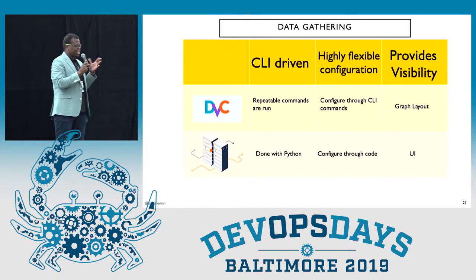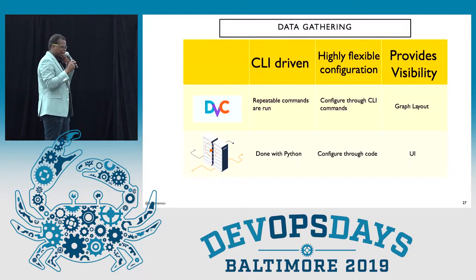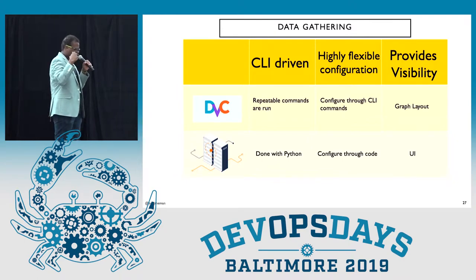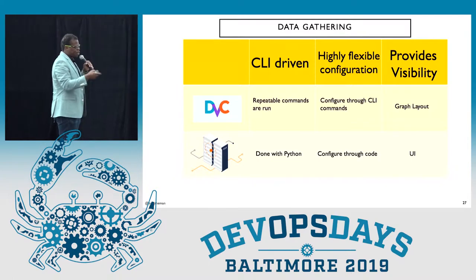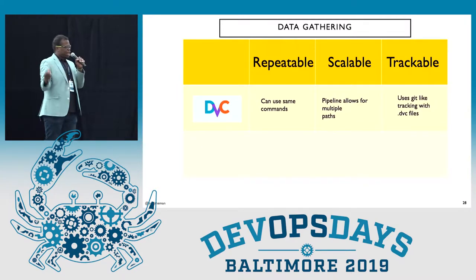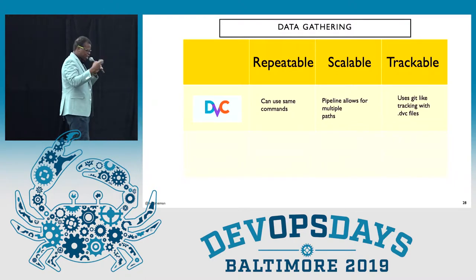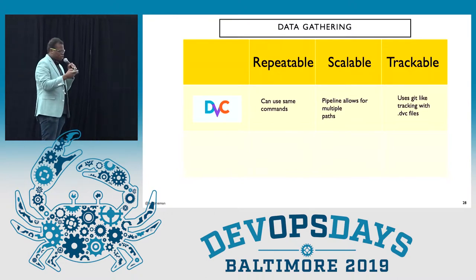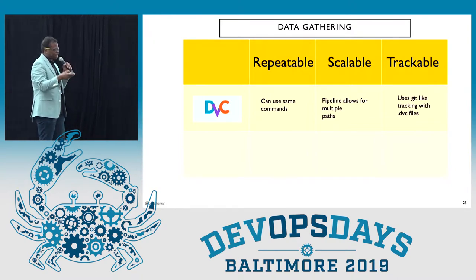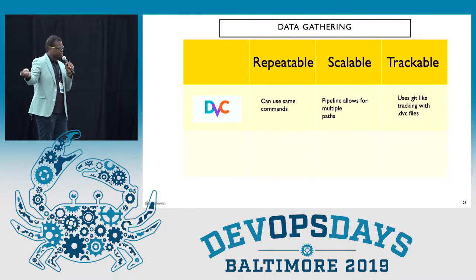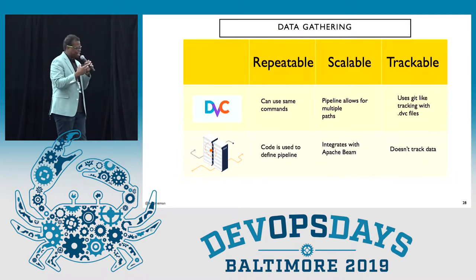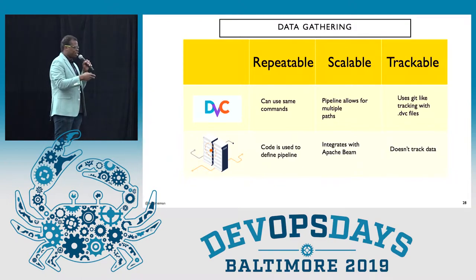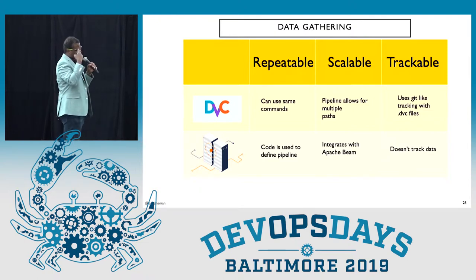To reiterate: DVC has a CLI delivery process, a highly flexible configuration file, and provides visibility through the pipeline command. TFX has everything driven through Python, you can configure it through code, and it gives a UI for visibility. DVC is repeatable because of those CLI commands you can keep running, scalable because you can input those command lines wherever you need in your pipeline, and trackable through the pipeline command. TFX similarly has everything codified, uses Apache Beam under the hood to scale out if needed, and is trackable through its UI.